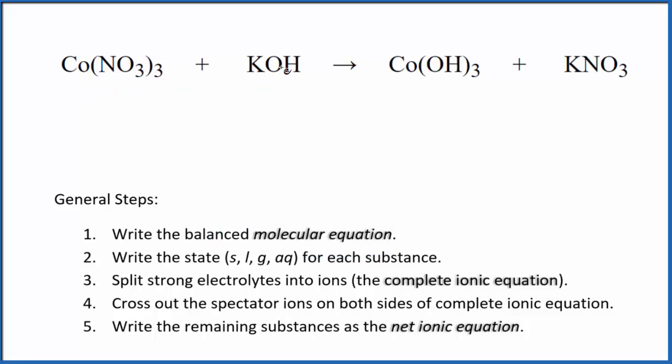I can see right away that I have this nitrate here. I have three of them and only one here, so I'm going to put a three in front of the potassium nitrate. That balances the nitrates. Three potassiums, let's put a three here. The potassiums are balanced. Three hydroxides, three hydroxides here, cobalt and cobalt. This is the balanced molecular equation.